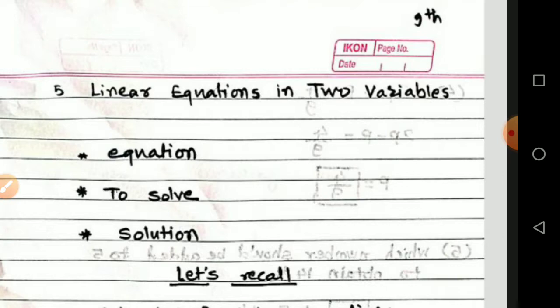First, what is an equation? Equation means a mathematical statement which shows the equality — a mathematical statement which shows the equality is called an equation.